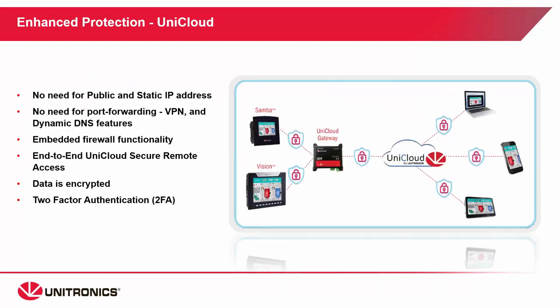As enhanced protection, UniCloud can be used with Vision or Samba. When using UniCloud, there is no need for public and static IP addresses, no need for port forwarding — everything is done over a VPN connection. There is embedded firewall functionality included. The data is encrypted, both in transit and at rest. There is two-factor authentication on UniCloud. The UniCloud allows full secure remote access without any publicly available IP addresses, keeping the machine totally secure using a VPN connection.